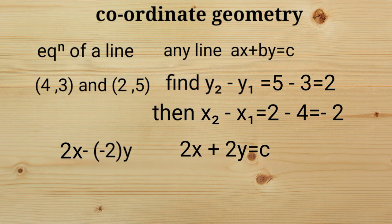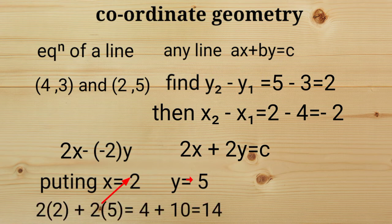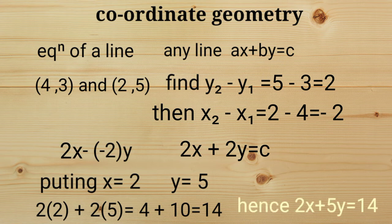In order to find c, put x equals 2 and y equals 5. So 2 times 2 plus 2 times 5 equals 4 plus 10 equals 14. Hence our final equation comes out to be 2x plus 2y equals 14.